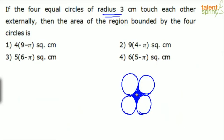This region has to be calculated. How do you get this? We know that all four circles are equal with radius 3 centimeters. Connect the centers: this radius is 3, this is 3, this is 3, this is 3, this is 3, this is 3, and this radius is 3.